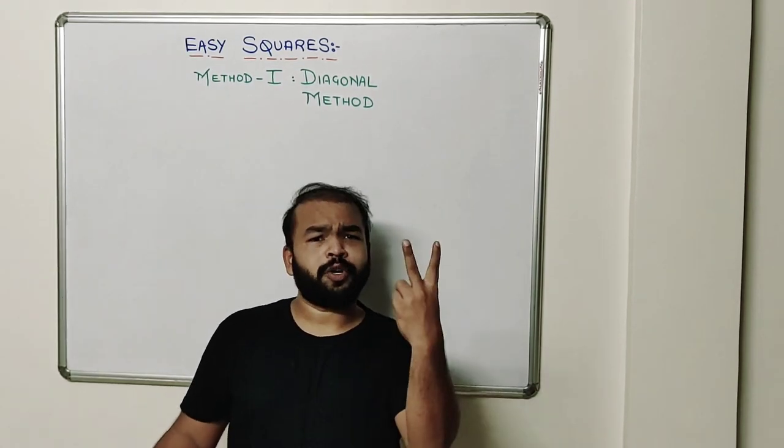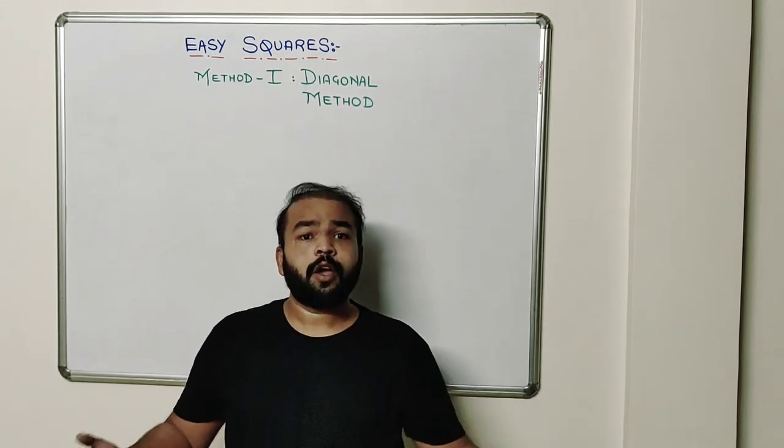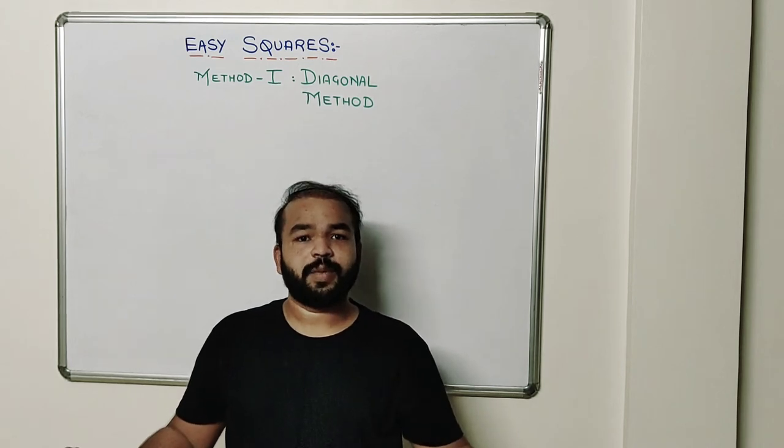There are two tricks to find the squares of a number. So today we will see the first method which is diagonal method. So let's start the trick.